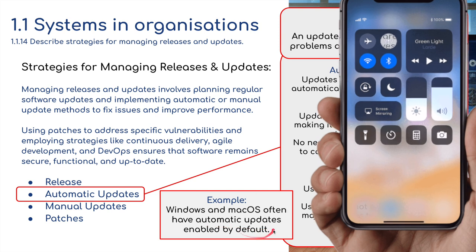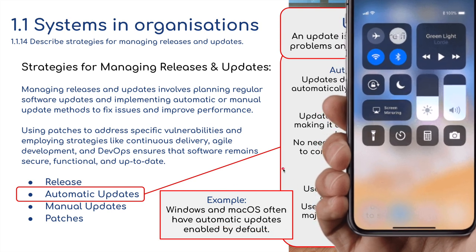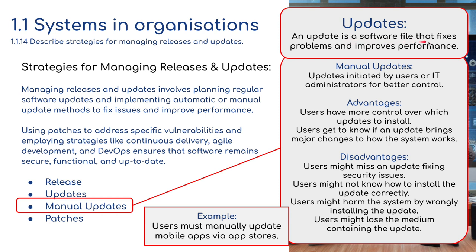Windows and macOS often automatically update, and this is enabled by default. Manual updates — an update is a software file that fixes problems and improves performance. Manual updates are initiated by the user or IT administrators for better control. Users have more control over which updates to install, and they get to know if an update brings major changes to how the system works. Disadvantages: users might miss an update fixing security issues, or might not know how to install updates correctly.